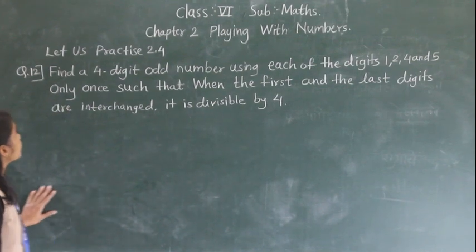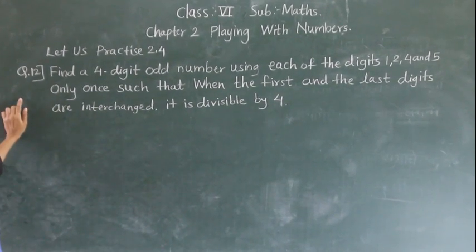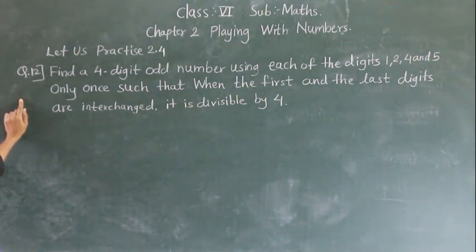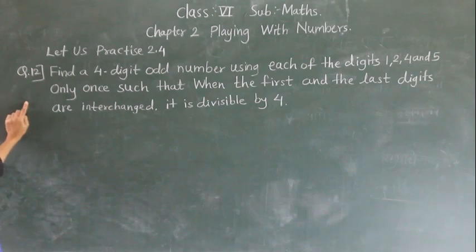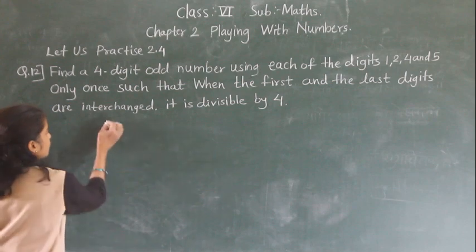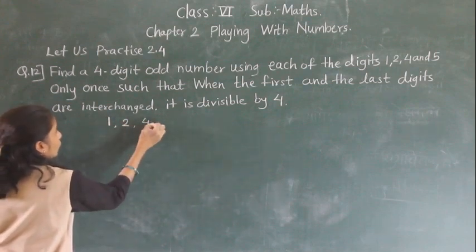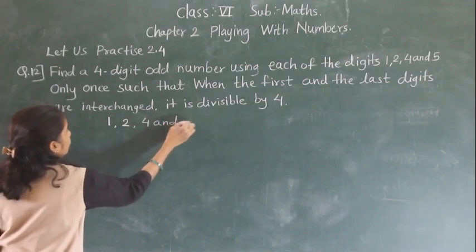Hello everyone. Let's start with question number 12: find a 4-digit number using each of the digits 1, 2, 4, and 5 only once, such that when the first and last digits are interchanged, it is divisible by 4. So, the digits we use are 1, 2, 4, and 5.